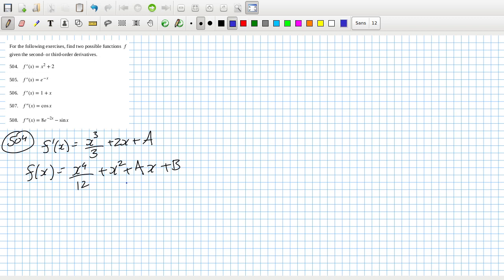So I guess two possible answers could be x power 4 over 12 plus x squared plus x, or it could be x power 4 over 12 plus x squared plus 1. They will have a second derivative of x squared plus 2.